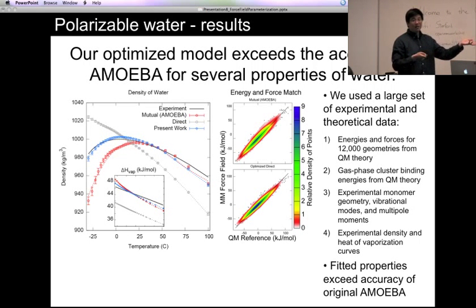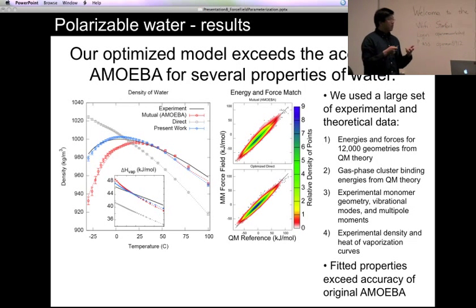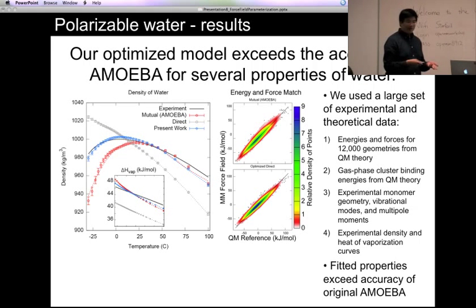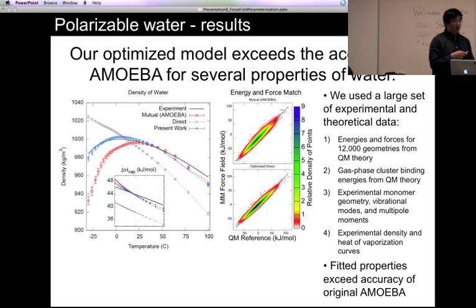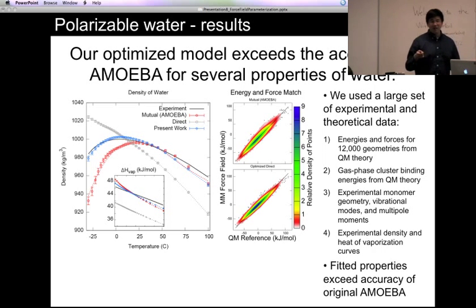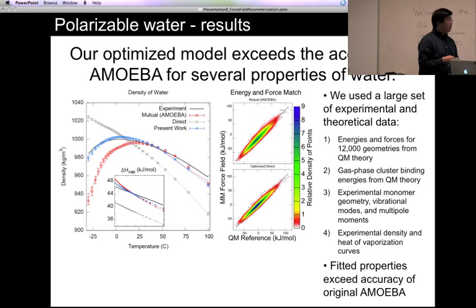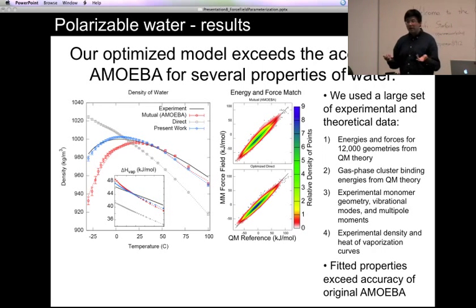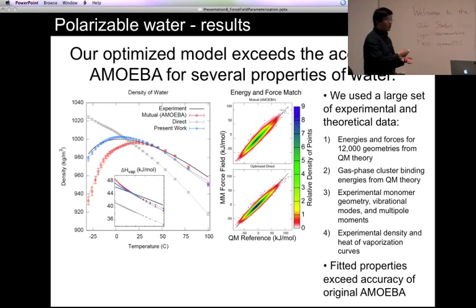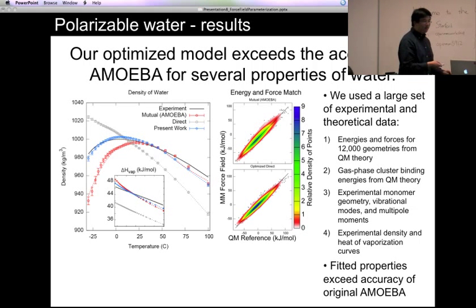The scatter with respect to quantum energies and forces is also better now. These are the properties that we fitted to. It's obvious that this is glorified curve fitting, and the results are going to be better. But the true test of the force field is whether it can predict properties that were not in the objective function.